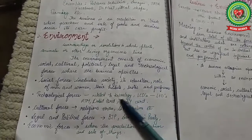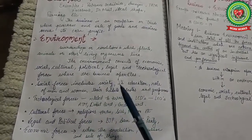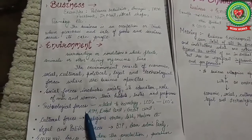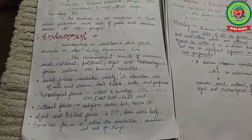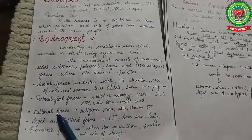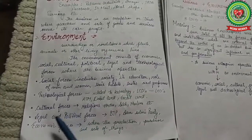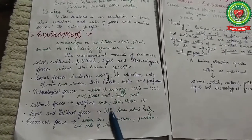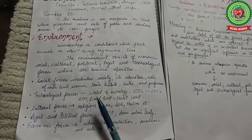Technology includes forces related to innovations such as ATMs and other technological developments that a businessman must keep in mind. Cultural forces include various religions — for example, India is a diverse nation with many religions. Legal and political forces refer to the government in power — like various political parties such as BJP and AAP — which provide various policies and rules that affect business.